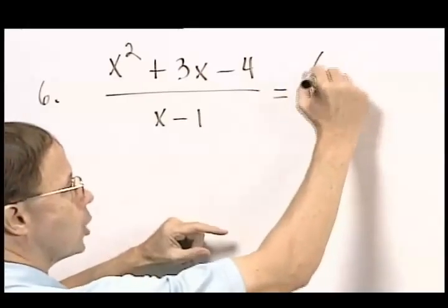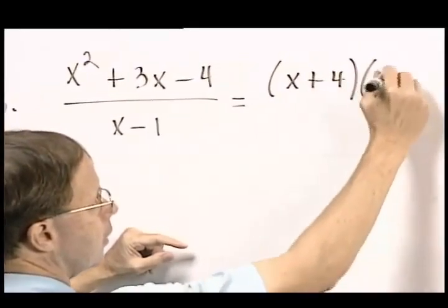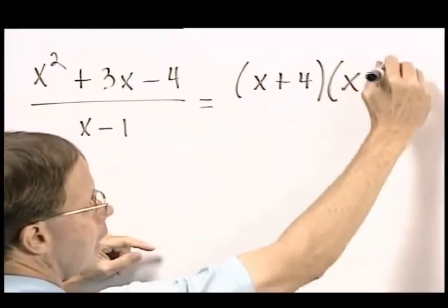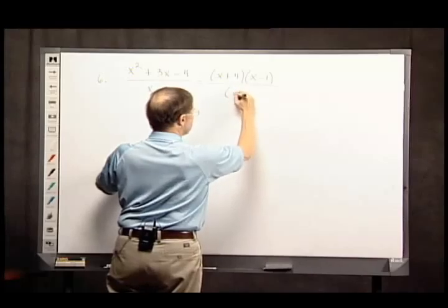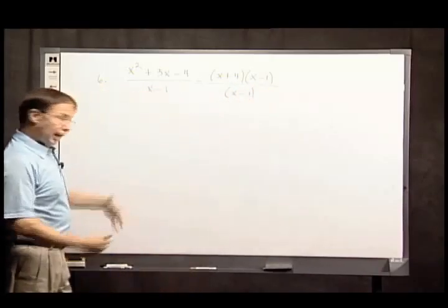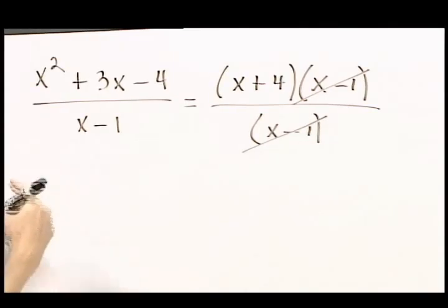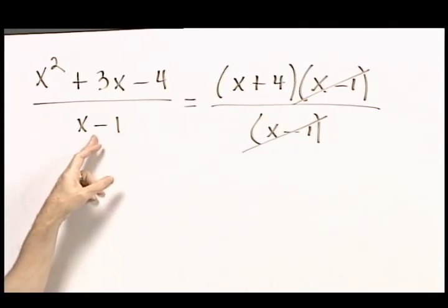When I factor this expression, I find that one of the factors up here is the same as a factor in the denominator, and I can cancel away, and I'm left rather quickly with the simplified form of this rational expression.